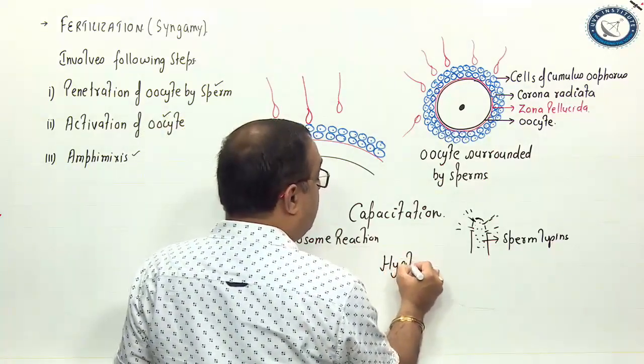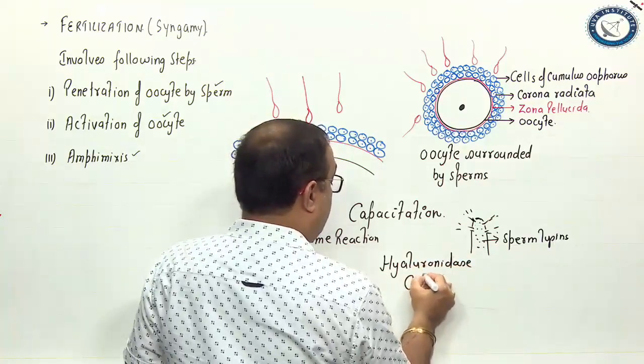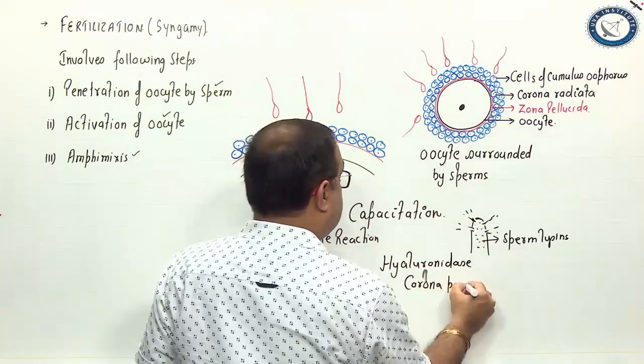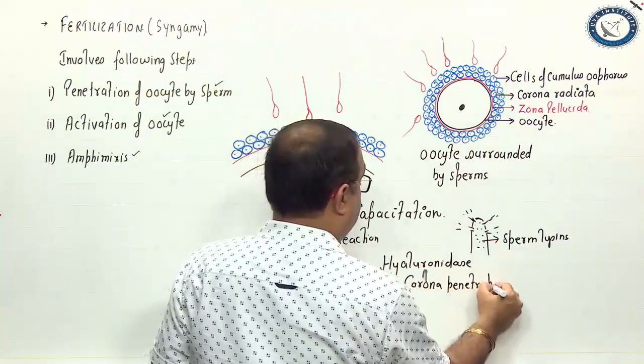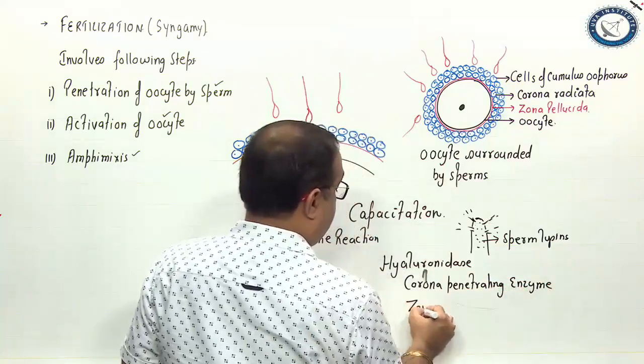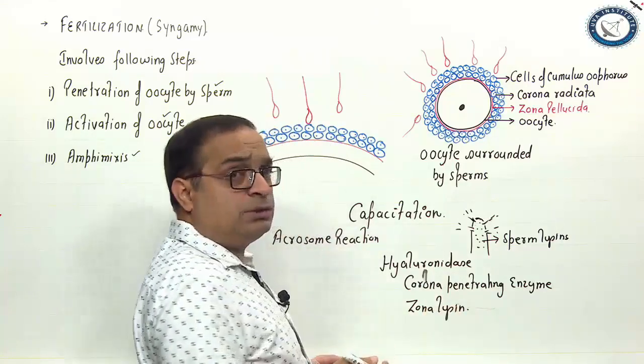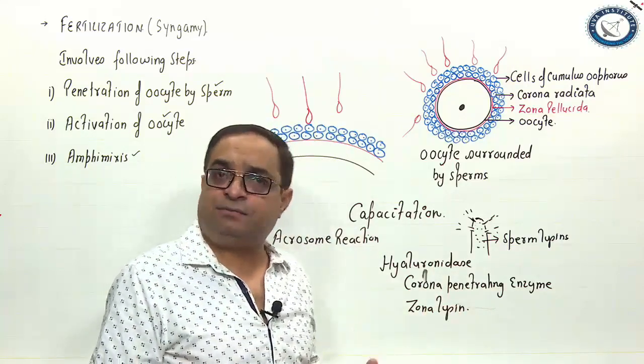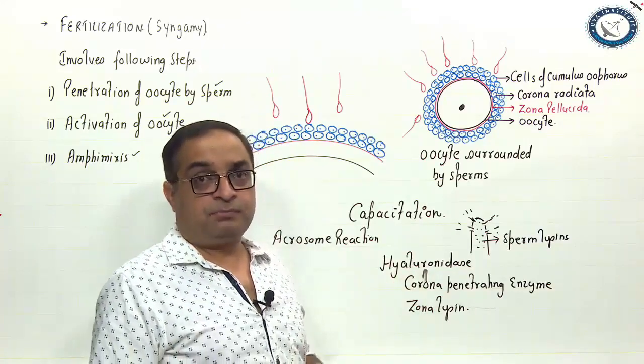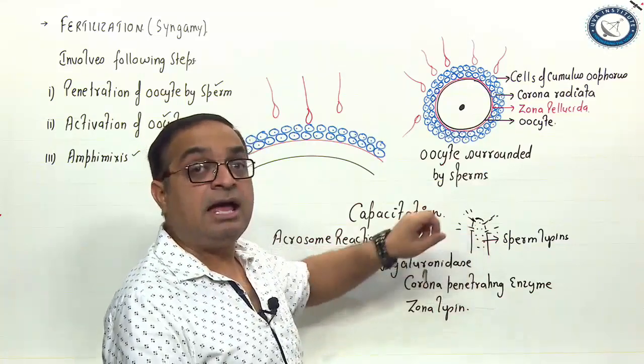Different enzymes which are going to remove the different layers which are surrounding the oocyte. Sperm lysins, the enzymes are hyaluronidase, corona penetrating enzyme CPE, zonalycin. There are other enzymes also, neuroaminidase, acid phosphatase, alkaline phosphatase, cathepsin. These are the important ones. These are the enzymes which are present in the acrosome.